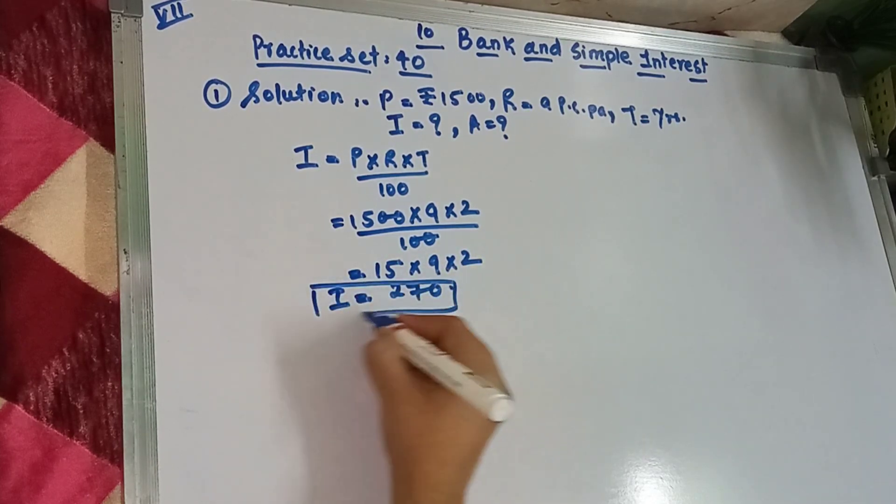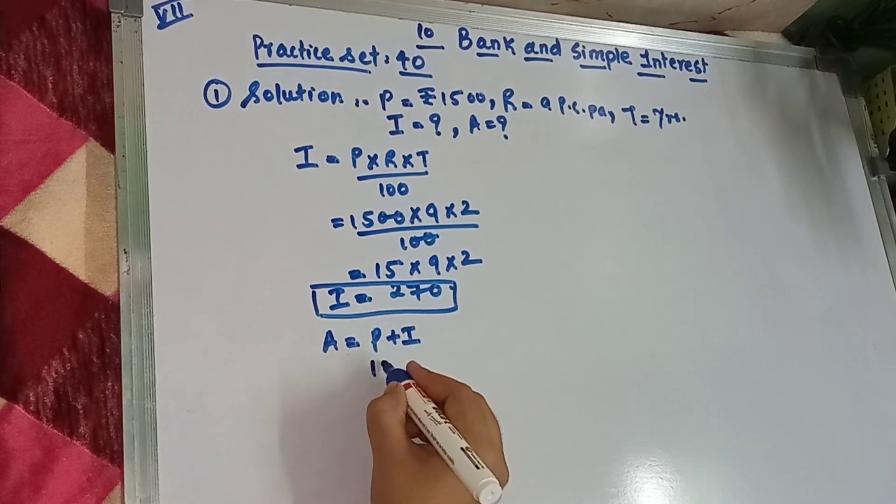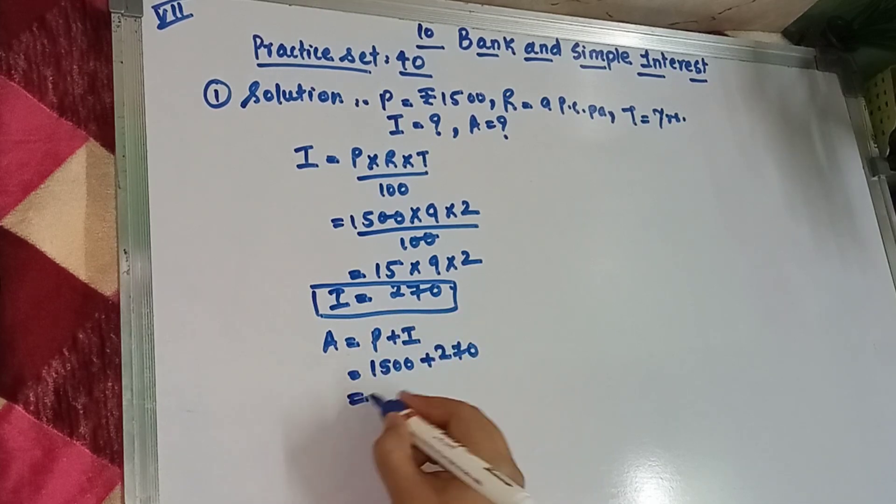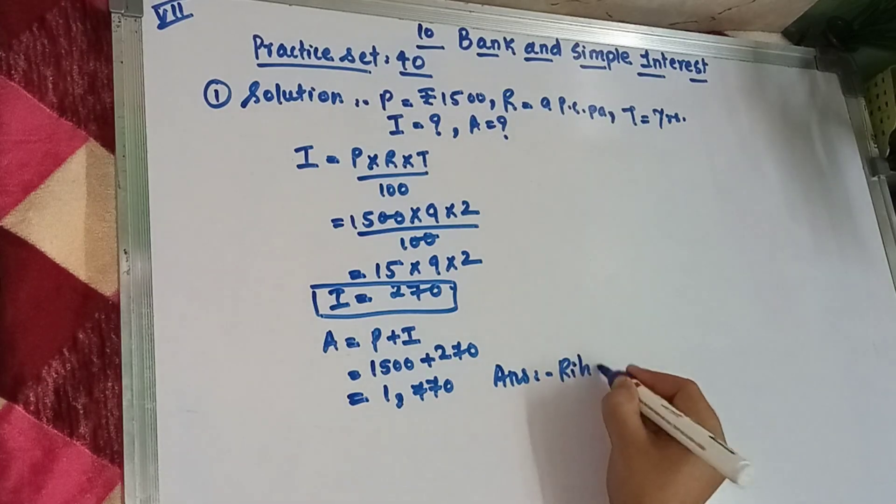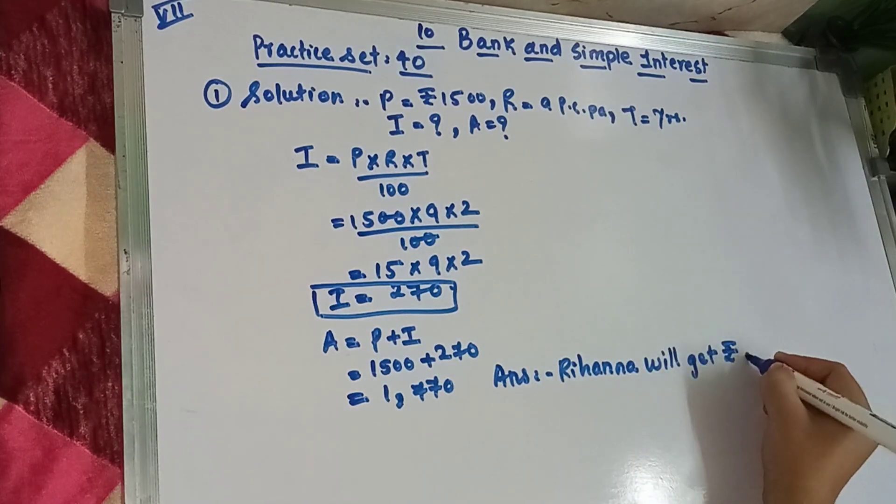Then humko amount find out karna hai. Amount ka formula hai principal plus interest. Then principal iska hamara tha 1500 or interest hai hamara 270. Toh usko plus karenge toh 1,770. Rihanna will get 1,770.